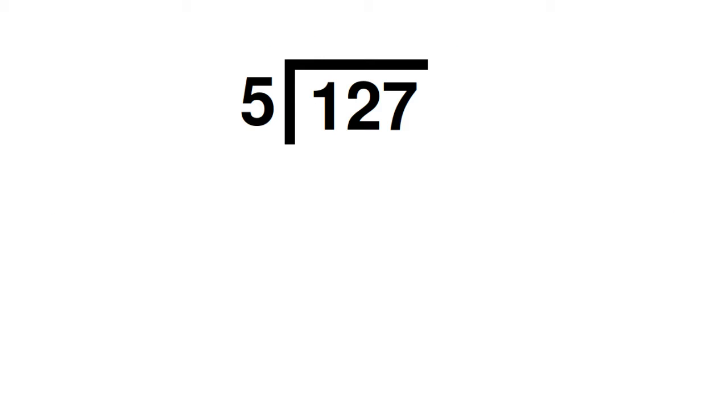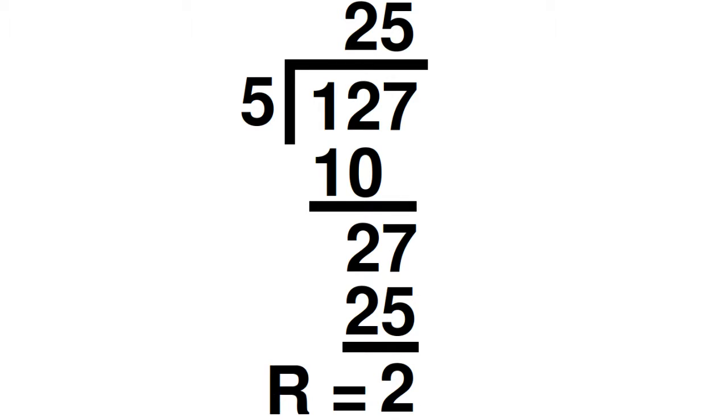The first thing we need to understand is that all numbers divided by five will have a remainder that is either zero, one, two, three, or four.